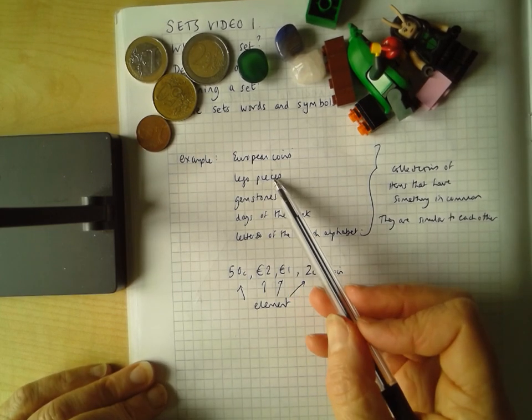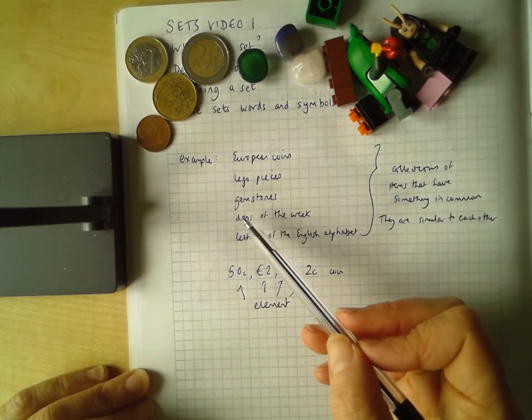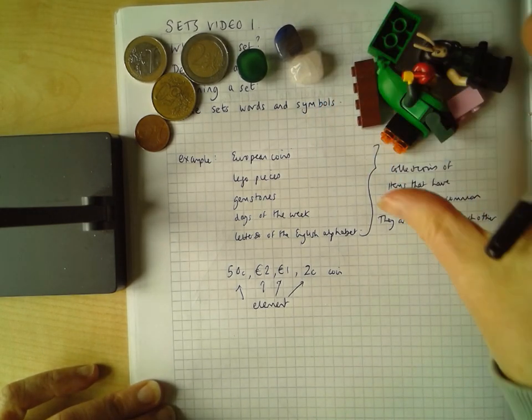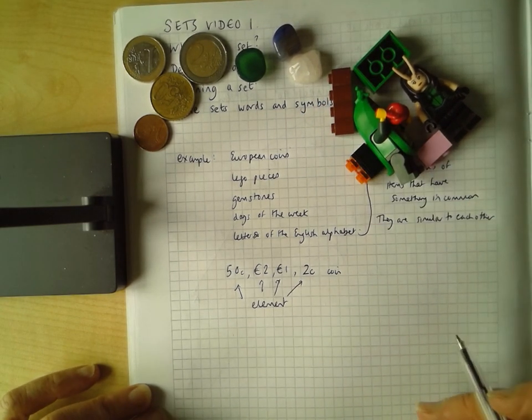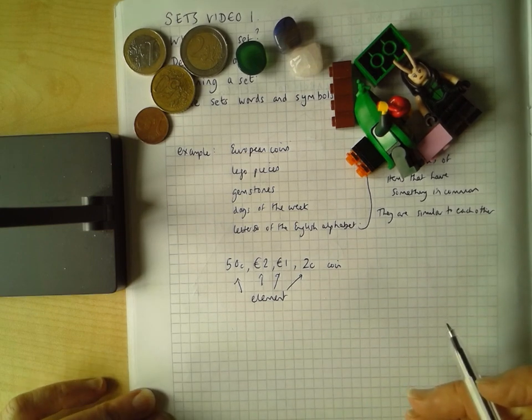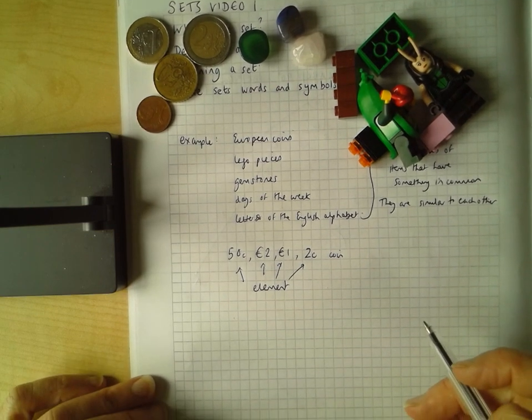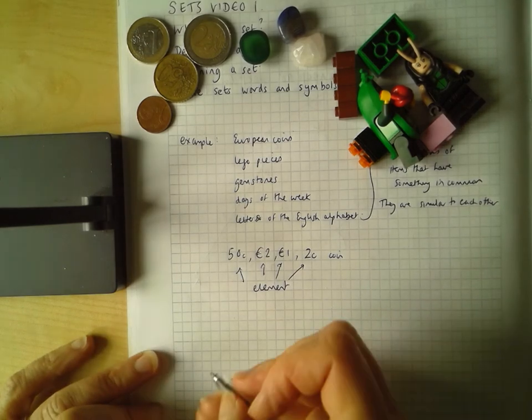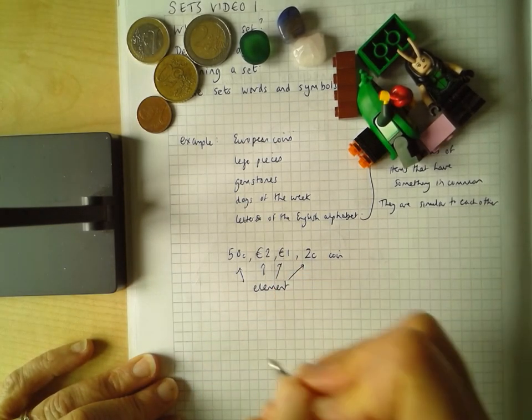The same with Lego pieces, the same with gemstones, the same with days of the week. It's important that we know what is contained in those sets and that it's different to something else. So say I said to you, a set that wasn't clearly defined, so wasn't clear. So these are all very clear.